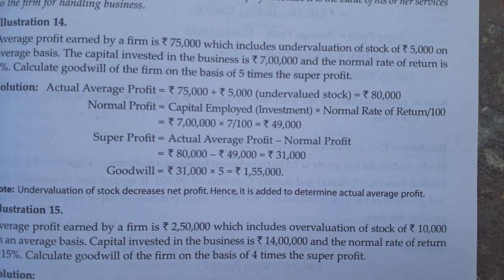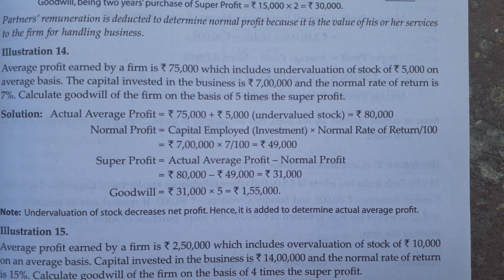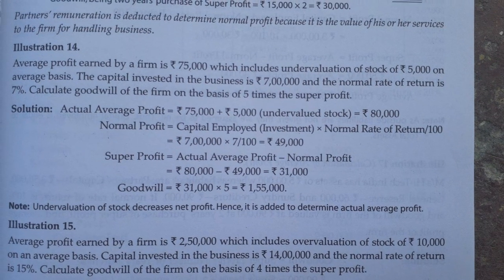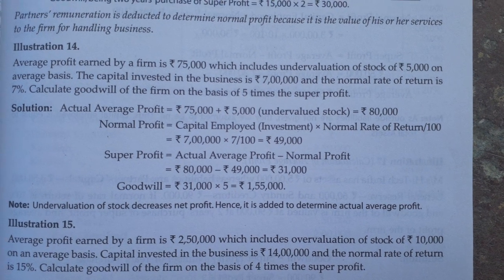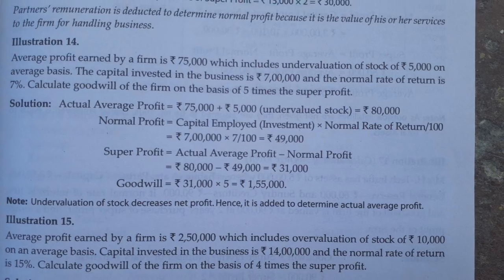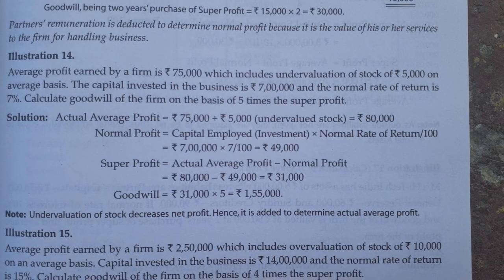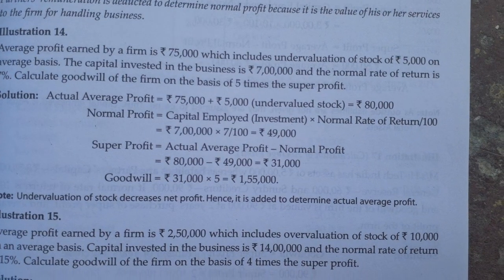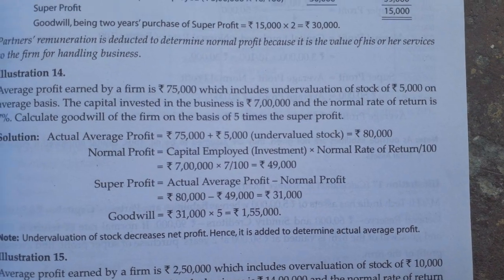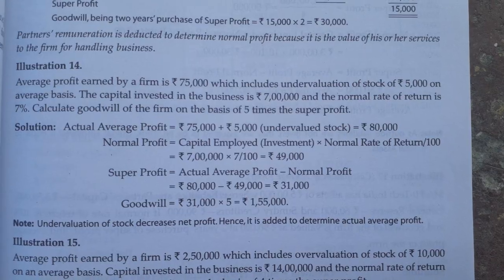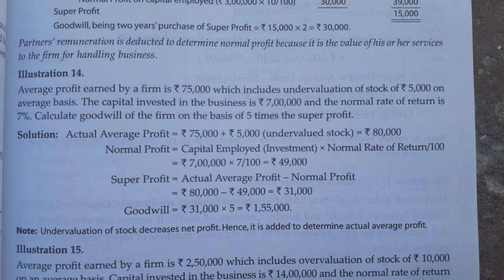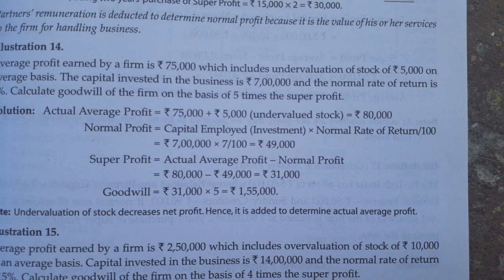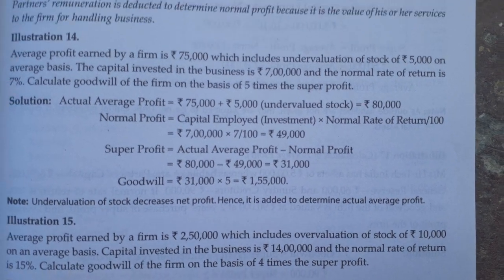The third step is super profit. Super profit equals average profit minus normal profit. Average profit is 80,000 and normal profit is 49,000. Deducting 49,000 from 80,000 gives us a super profit of 31,000. Goodwill is super profit multiplied by the number of years of purchase, which is 5. So 31,000 × 5 = 1,55,000.